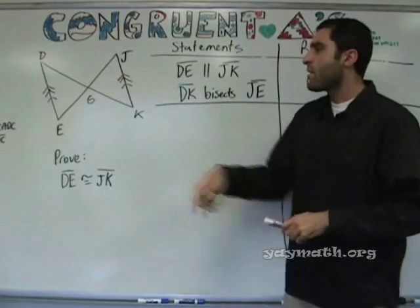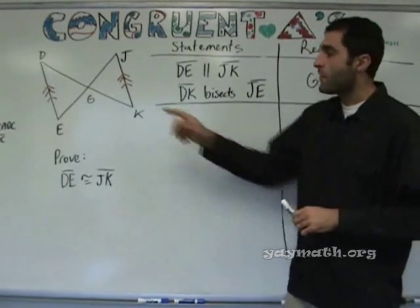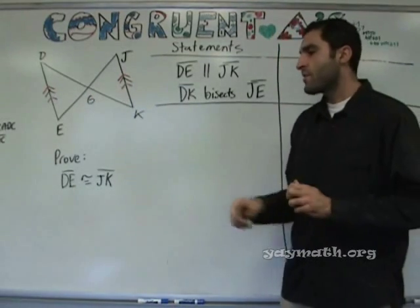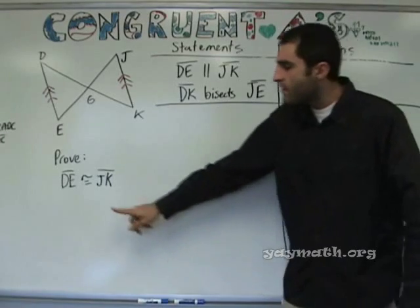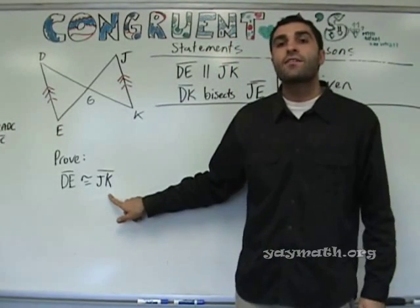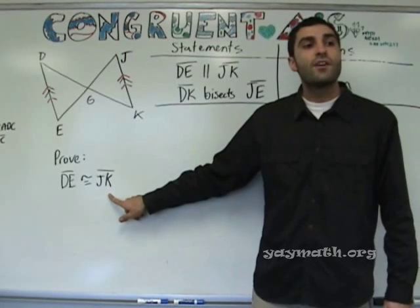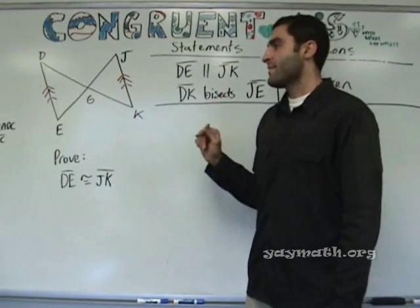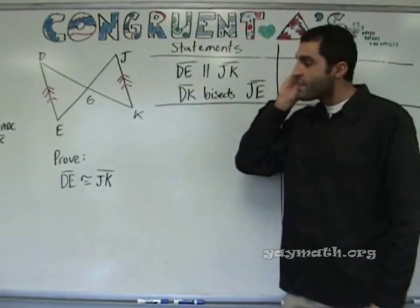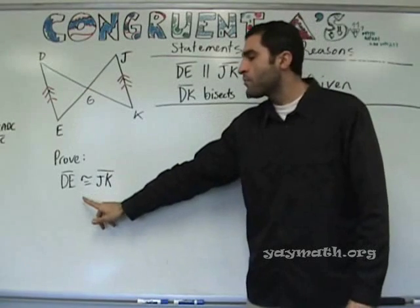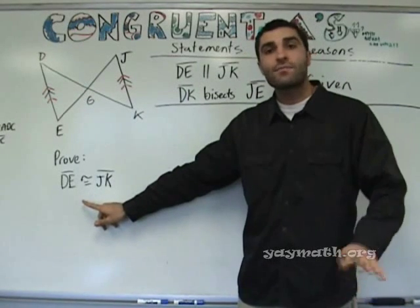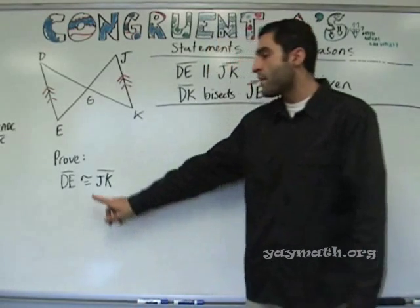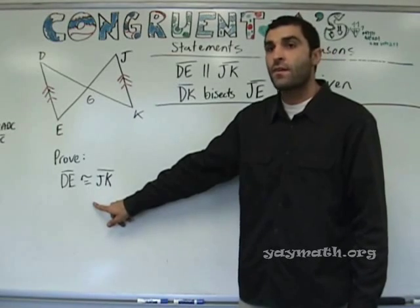We're doing more congruent triangles. Notice there are two triangles we want to prove congruent. However, there's an issue we haven't gone over yet — notice what we're actually trying to prove. We are NOT trying to prove that two triangles are congruent. That's the new wrinkle. Even though the prove statement doesn't say prove the triangles congruent, you're going to prove the triangles congruent first, and then we can prove this other piece — I'll explain that shortly.